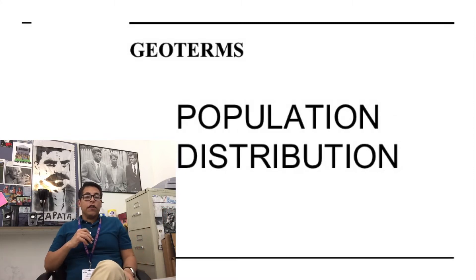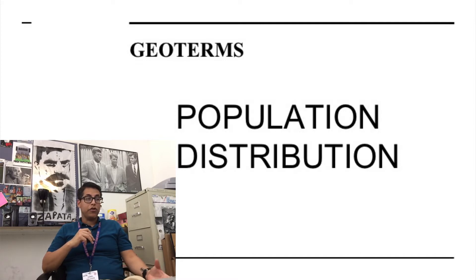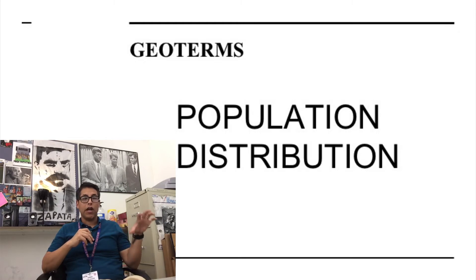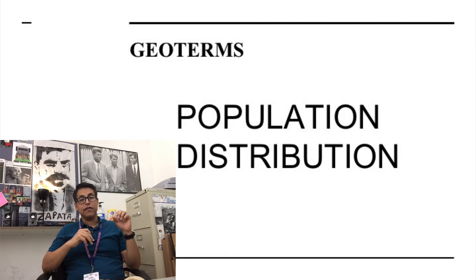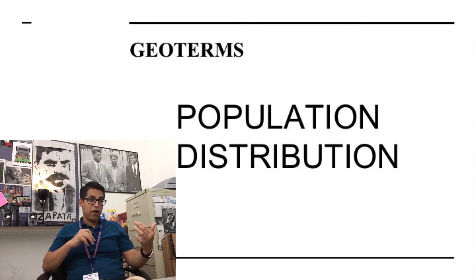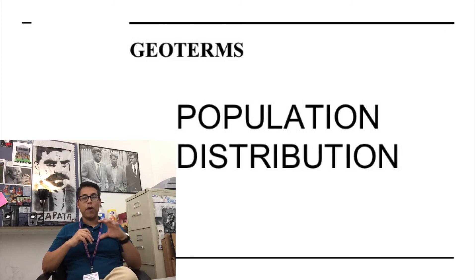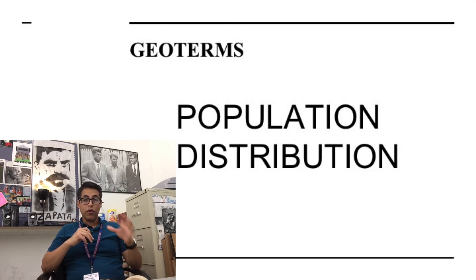Know as well the term population distribution, because that is a term that will be asked of you. Population distribution is simply where people are spread out in a country. In a country like Japan, the biggest factor is the fact that there are mountains. The physical features of Japan have stopped people from living wherever they want. Most people live near the lowlands, near the coastlines — that's where the most populated cities like Tokyo are, located in areas that are not so mountainous.